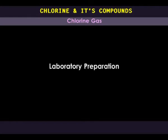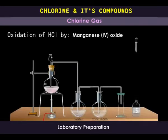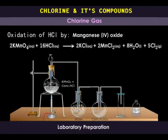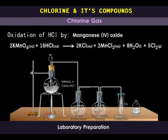In the laboratory, chlorine gas is prepared by the oxidation of concentrated hydrochloric acid by oxidizing agents such as manganese 4-oxide, potassium manganate 7, and potassium dichromate 7. We add a few drops of concentrated hydrochloric acid to the potassium manganate 7 solution. A redox reaction takes place liberating chlorine gas. Water is used to remove traces of hydrochloric acid fumes, and concentrated sulfuric acid removes moisture from the gas. Chlorine is collected by upward displacement of air because it is denser than air.